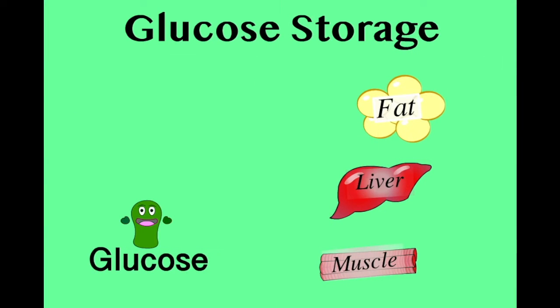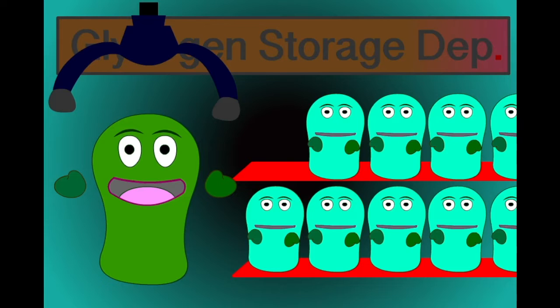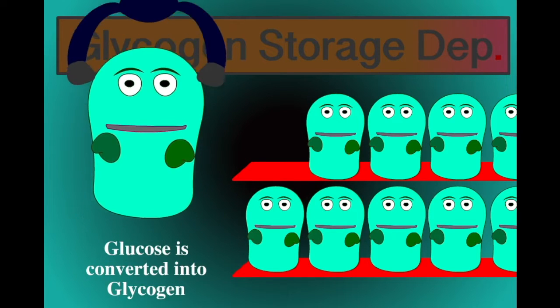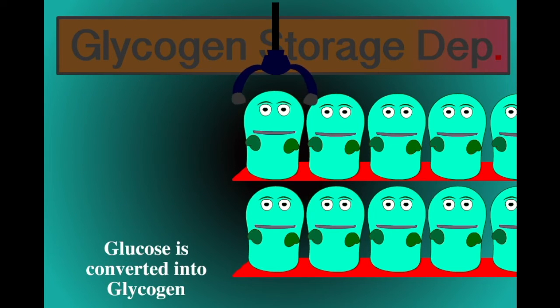When blood sugar levels are high, some of the glucose is stored away by the body for later use. It's taken into the liver and skeletal muscles, where it's converted into glycogen, a stored form of glucose.